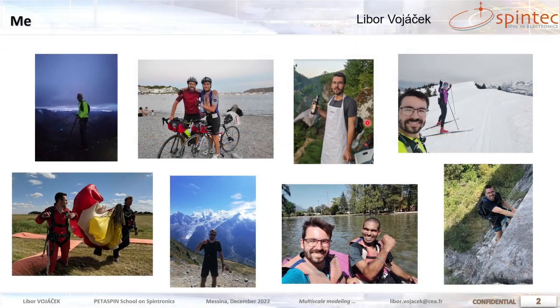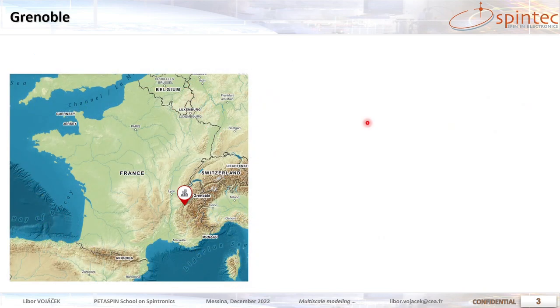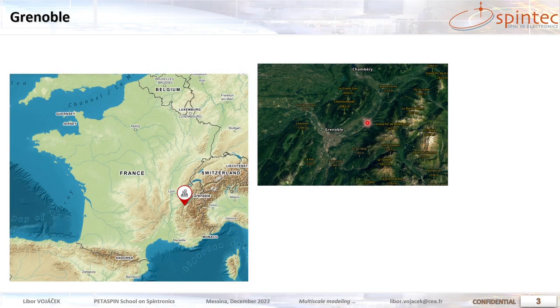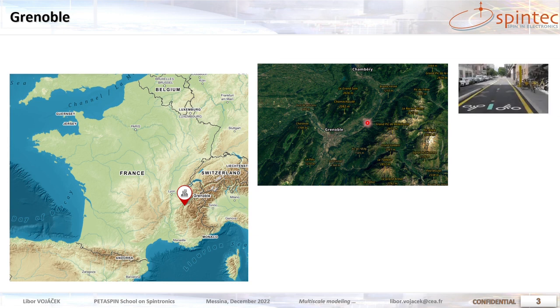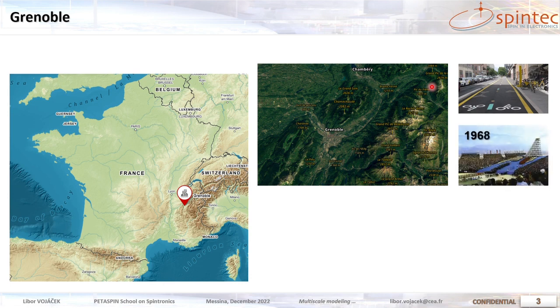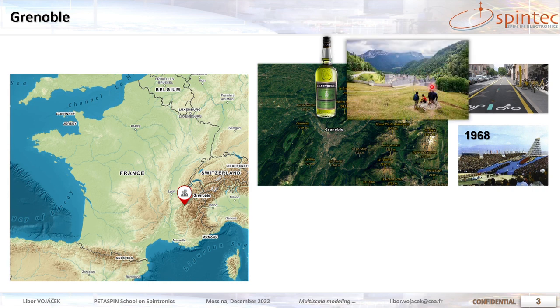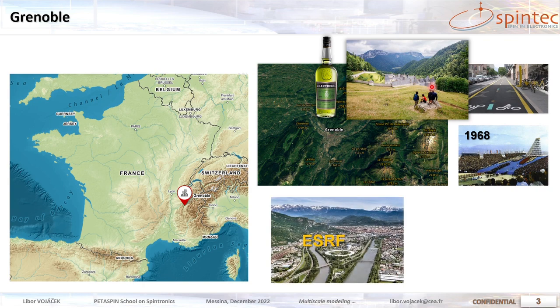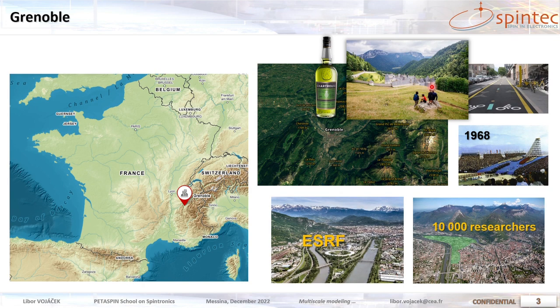My name is Libor Vojacek and as you can see, I enjoy spending my time outdoors. I come from Czechia and I'm doing my PhD in Grenoble in France, which is a nice city in between three mountain chains with the Alps in the east. The city itself is actually completely flat, so it's very bike friendly. There were Winter Olympics and they have a local spirit called Chartres, developed by the monks for 200 years. Maybe you will come for a beam time at the ESRF Synchrotron, and this area hosts about 10,000 researchers from both private and public sector.